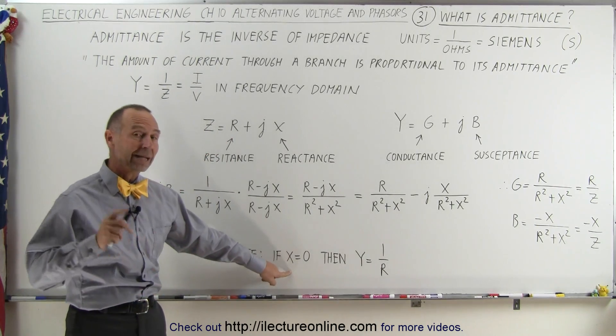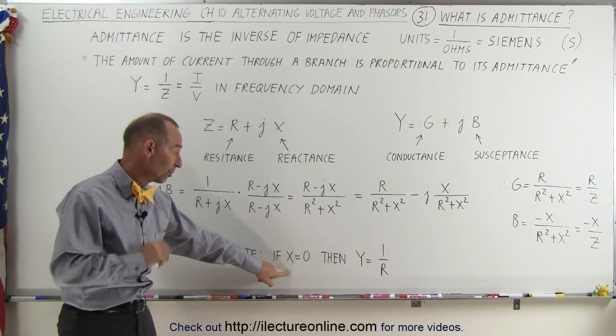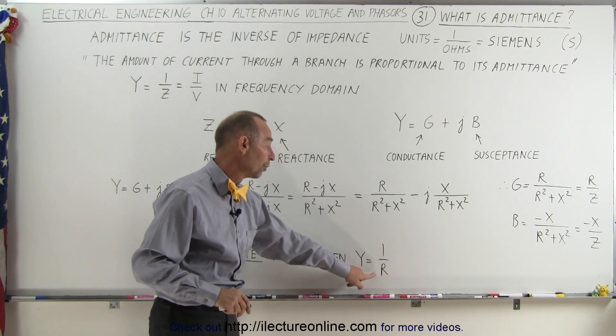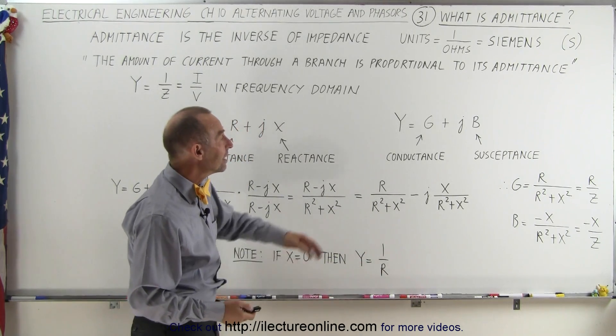Note that if there's no reactance in the circuit at all, no capacitors or inductance, then the admittance simply becomes one over R, which becomes the conductance. So the admittance equals the conductance if there's no capacitors or inductors in the circuit.